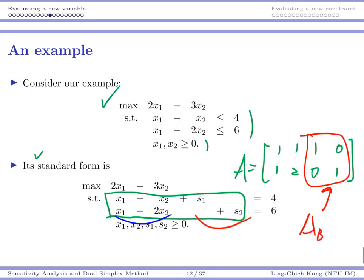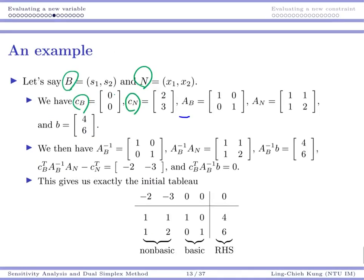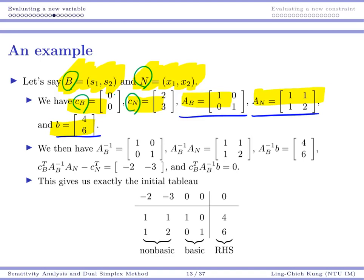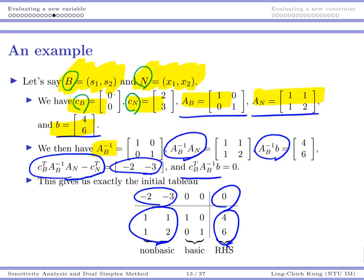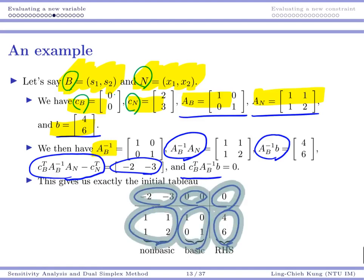With x1 and x2 as non-basic, the non-basic columns An are [1,1; 1,2]. The right-hand side b is [4, 6]. Once the basic and non-basic sets are chosen, we have cb, cn, Ab, An, and b. We then compute Ab⁻¹, then Ab⁻¹An, Ab⁻¹b, and the reduced cost cb^T Ab⁻¹An minus cn^T, as well as the objective value cb^T Ab⁻¹b.